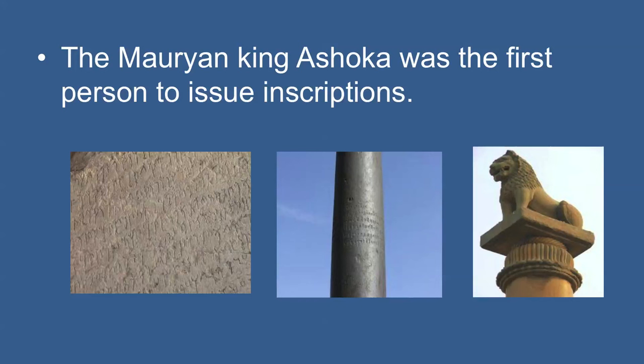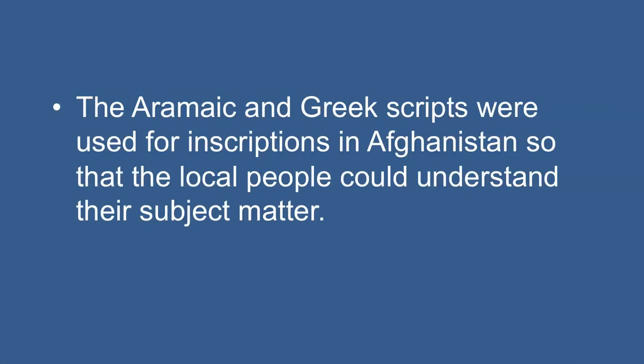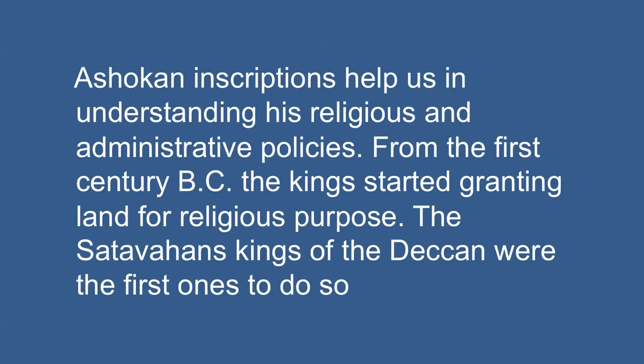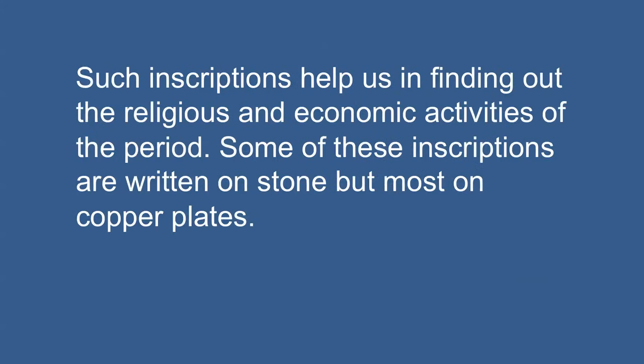The Maurya king Ashoka was the first person to issue inscriptions. Most of his inscriptions are in Prakrit language written in Brahmi and Kharoshti. The Aramaic and Greek scripts were used for inscriptions in Afghanistan so that the local people could understand their subject matter. The Brahmi script was first deciphered in 1837 by James Prinsep, who was a civil servant during the British period. Brahmi was written from left to right like Hindi, while Kharoshti from right to left. Ashokan inscriptions help us in understanding his religious and administrative policies. From the first century BC, kings started granting lands for religious purposes. Satavahana kings of the Deccan were the first ones to do so, and these inscriptions recorded the concerns granted to donors.